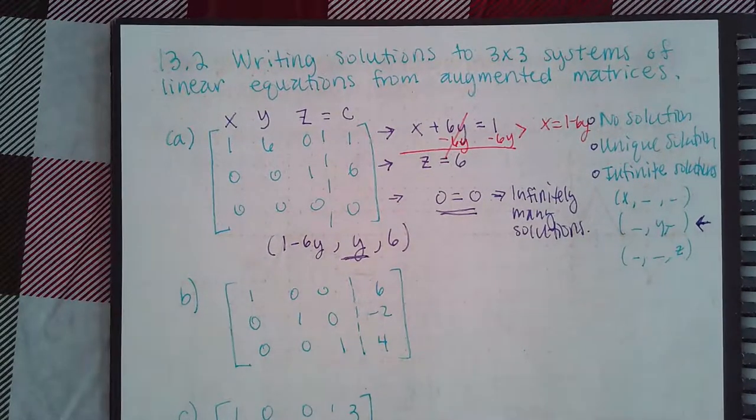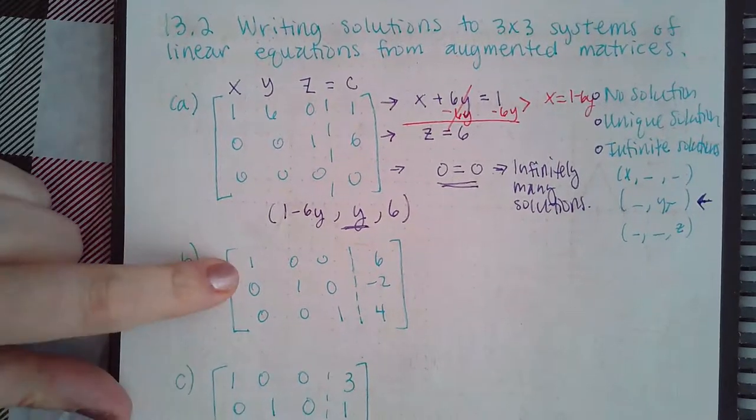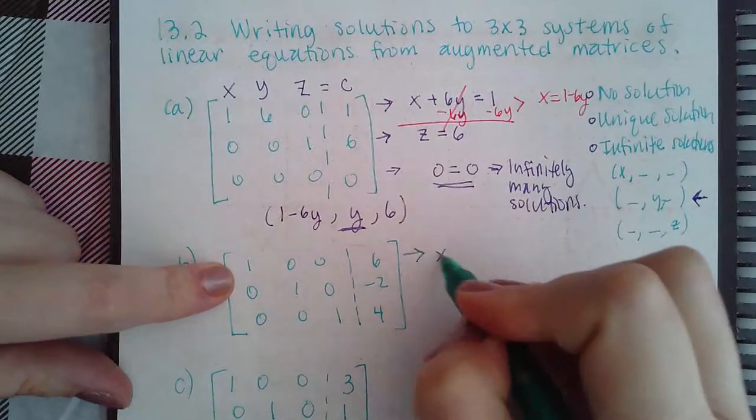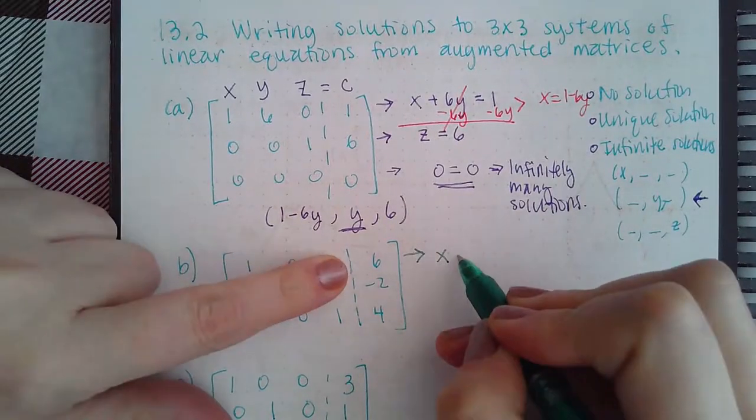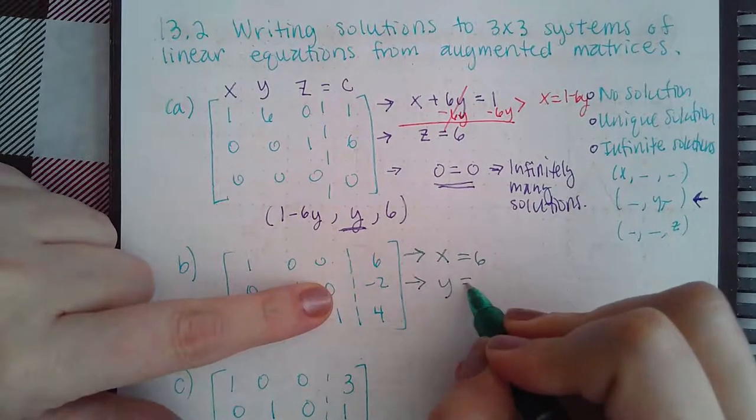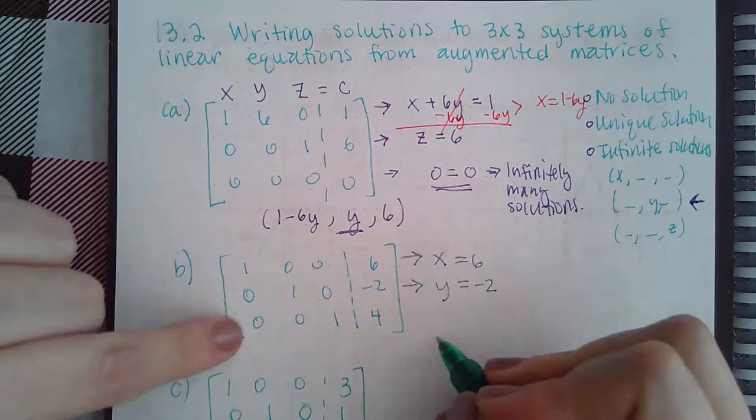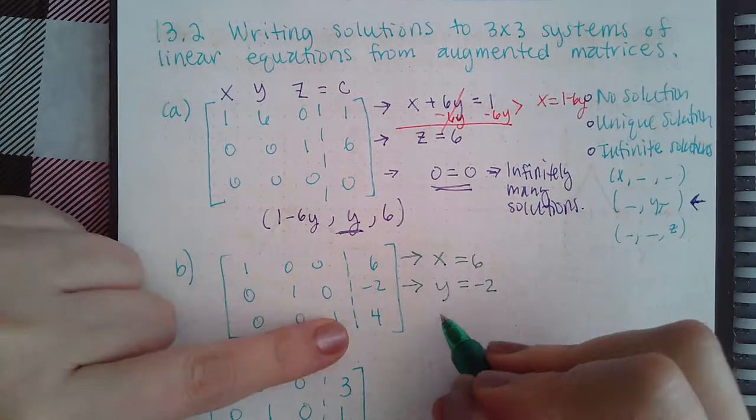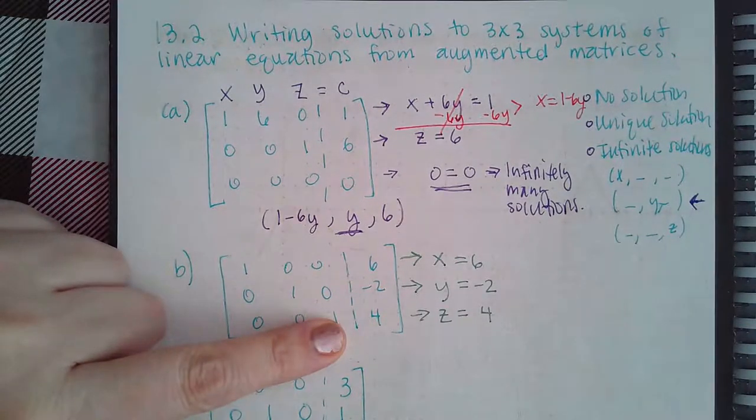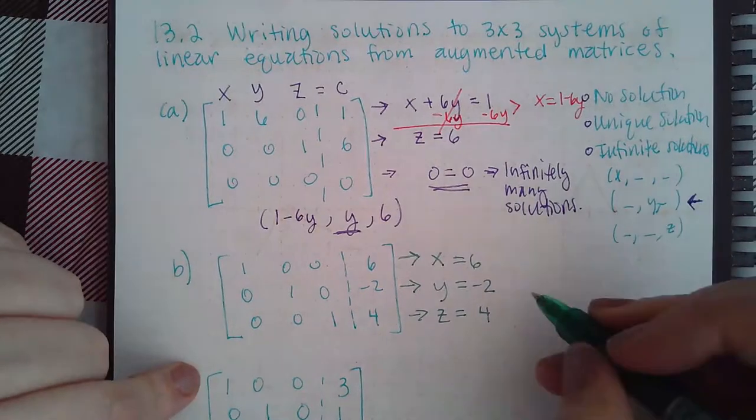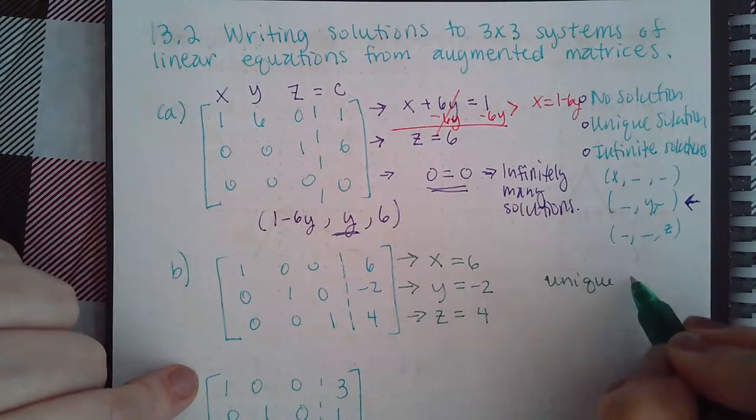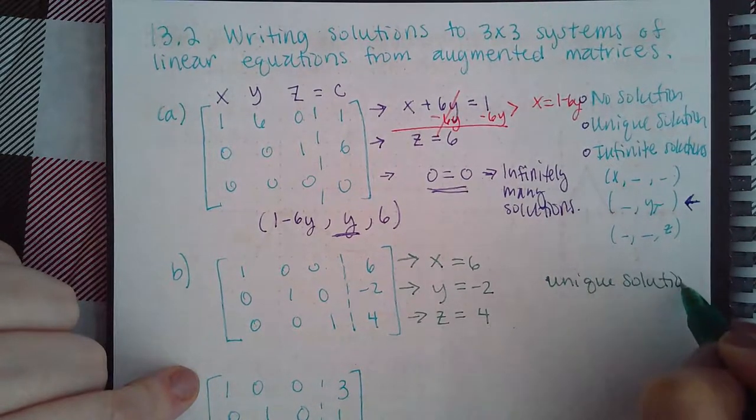Now let's look at another example. Here we have 1x, no y's, no z's equal to 6. Here we have no x's, 1y, no z's equal to negative 2. Here we have no x's, no y's, and 1z equal to 4. So then that means I'm going to select the option that says unique solution, and then I'm going to type in 6 for x, negative 2 for y, and 4 for z.